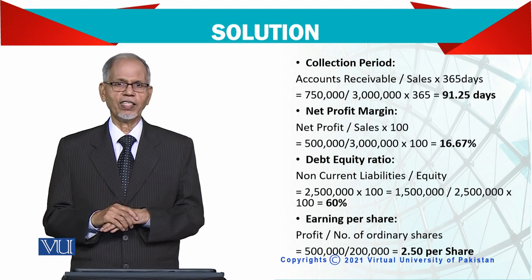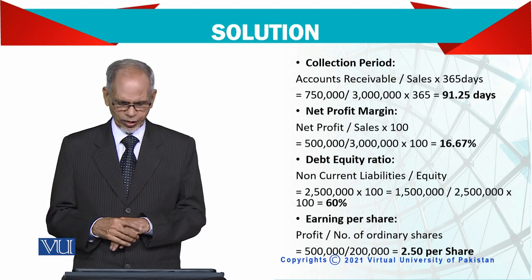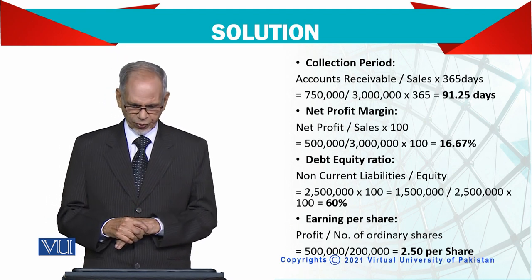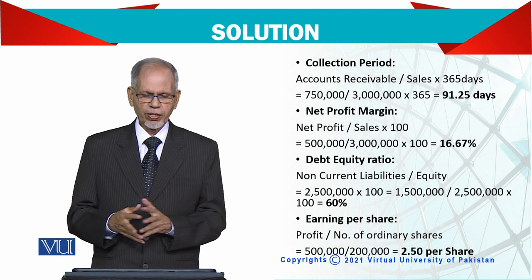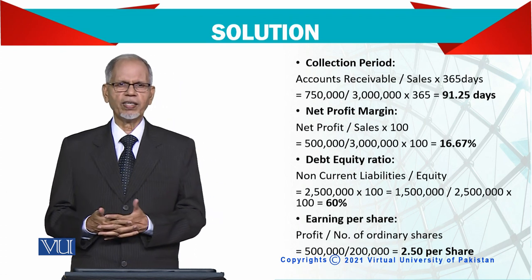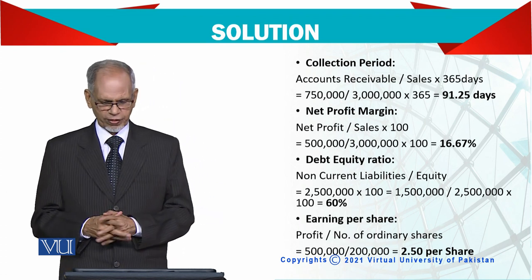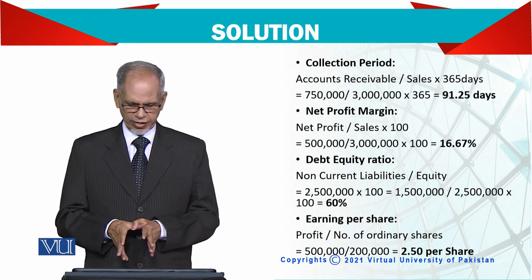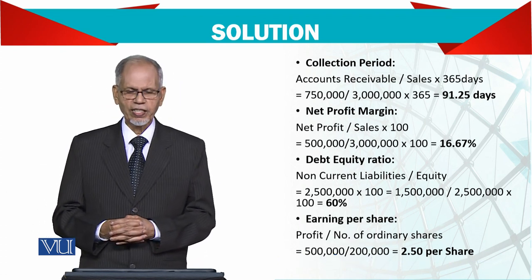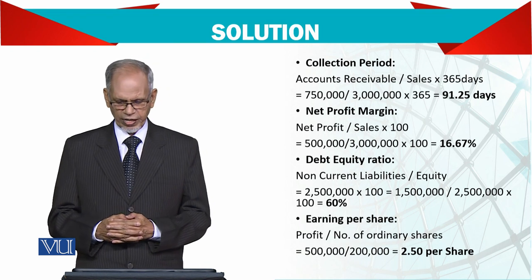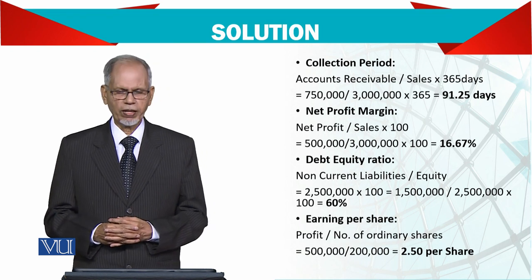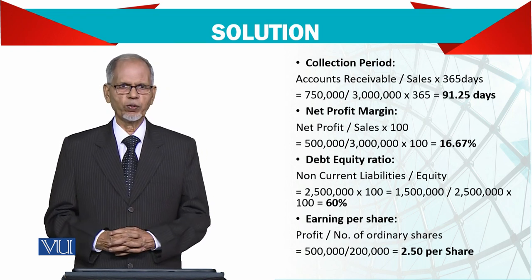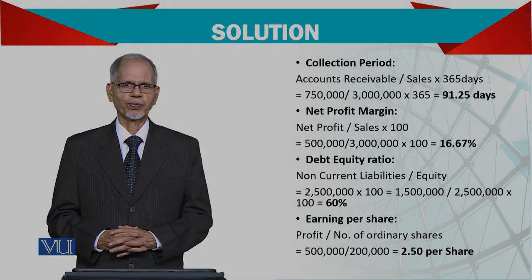60% तक allow है, इससे ज्यादा जो है वो खतरनाक है। Earning per share — यह हमने पहले भी किया है। Simple है: profit को divide करें number of shares से, तो आपकी figure आएगी 2.5। Thank you very much.